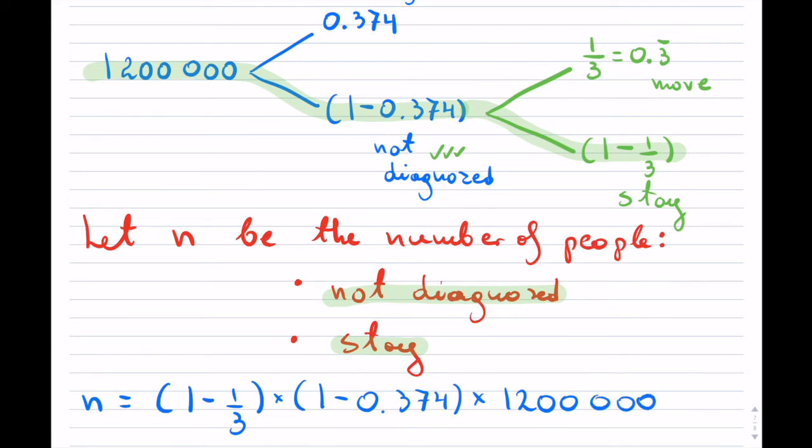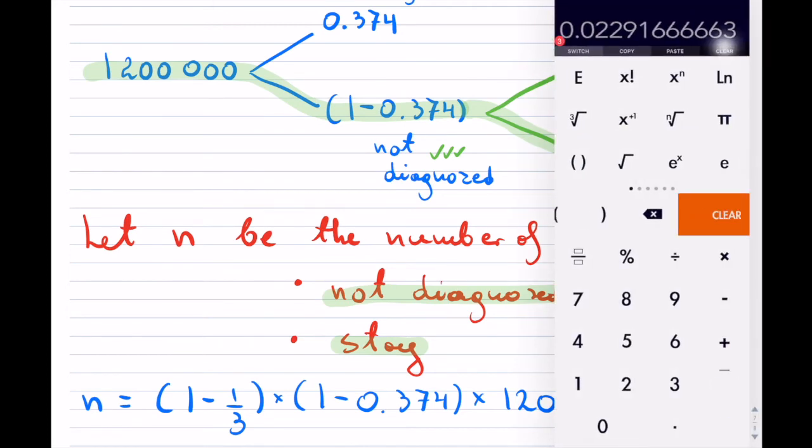Now I can take up my calculator here. So I have 1 minus, you can put it as a decimal, but I'll put it as a fraction here. So 1 over 3 times, and that will be 1 minus 0.374, and then times the 1.2 million. Just want to check, 1, 2, 3.